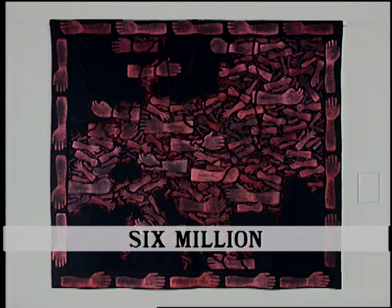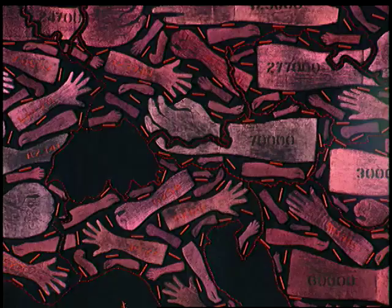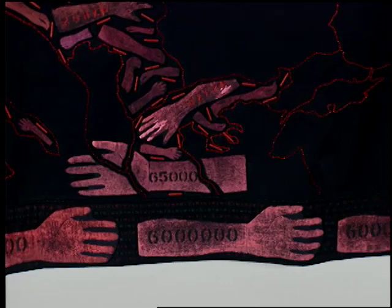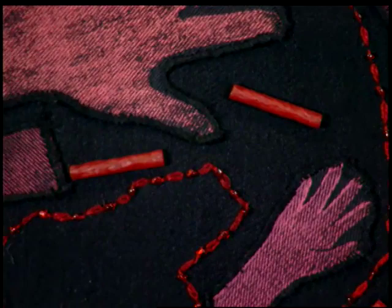The result of the Nazis' policy of extermination was the death of six million Jews. This map shows how many Jews perished in each part of Europe. The number that appears on each of the large arms, reminiscent of the tattoo on the arms of camp inmates, indicates how many Jews were killed in that area. The total of six million is indicated by the arms around the border. I used beads to express the carnage. The beads in this work are long and tubular with an irregular surface, reminiscent of trees that have been chopped down, a symbol for death.